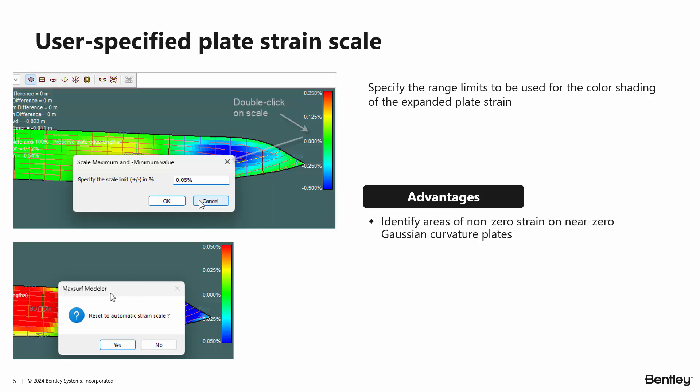Another request was to be able to edit the scale of the plate strain in the plate expansion. Now you can double click on the scale and change the maximum and minimum values. This makes it easier to identify areas of non-zero strain on near-zero Gaussian curvature plates.